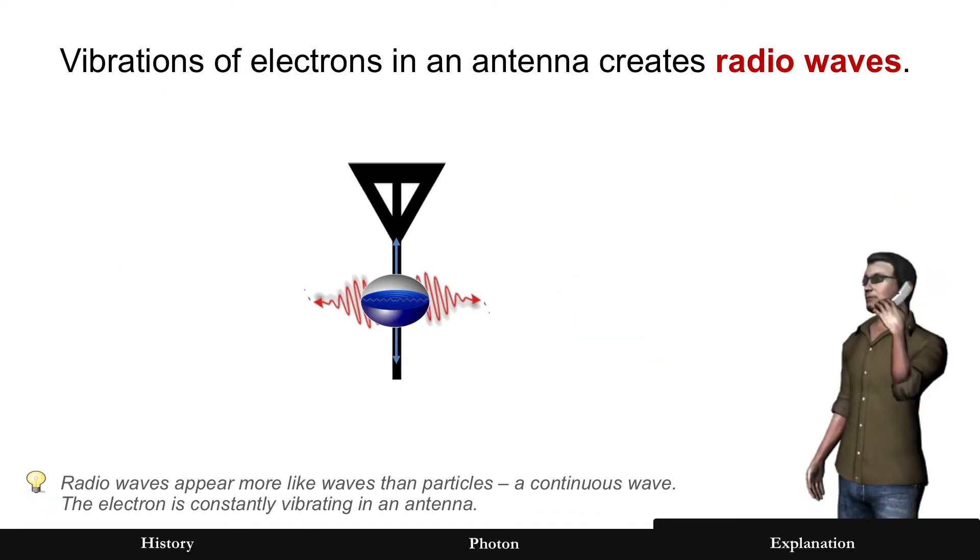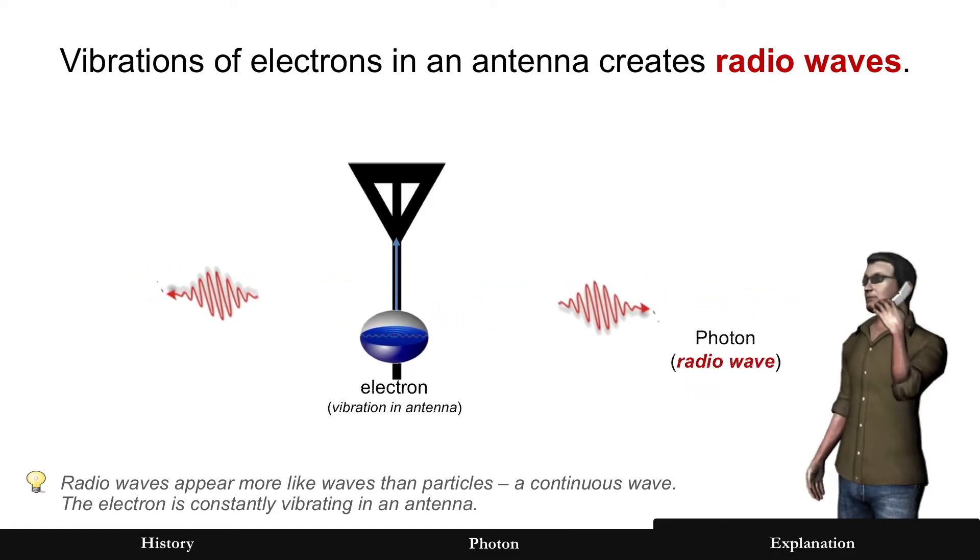We can't see radio waves, but they happen in all sorts of electronics, from the radio in your car to the cell phone. This is really just a vibration of electrons in an antenna that is creating the radio waves.